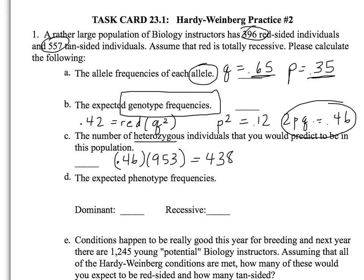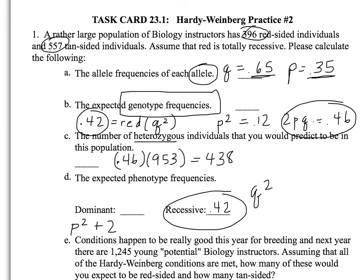For phenotype frequencies, the recessive phenotype is always your q squared value, which is 0.42. The dominant phenotypes are both p squared and 2pq added together, which in this case equals 0.58. Remember that all of these should equal 1, and 0.42 plus 0.58 does equal 1.